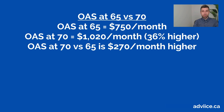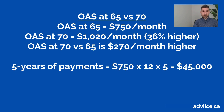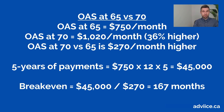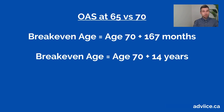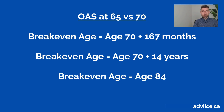The difference is $270 a month. Those five years of payments you're giving up by delaying your OAS benefit are worth about $45,000 — that's $750 a month times 12 months times five years. You get an extra $270 a month at age 70, so it takes about 167 months to make up those missed payments. Starting at age 70 and adding 167 months — roughly 14 years — means the breakeven age for delaying OAS from 65 to 70 is age 84.